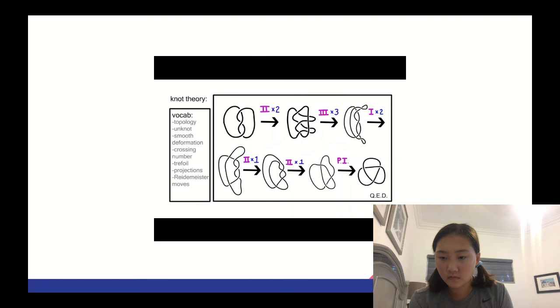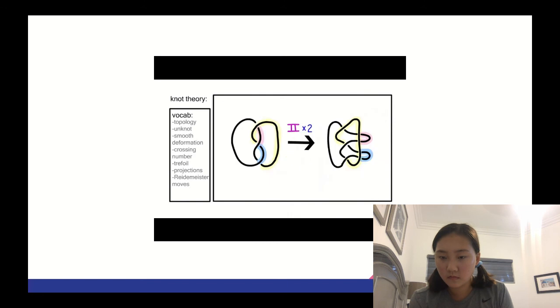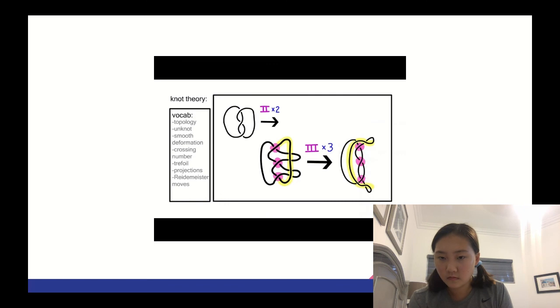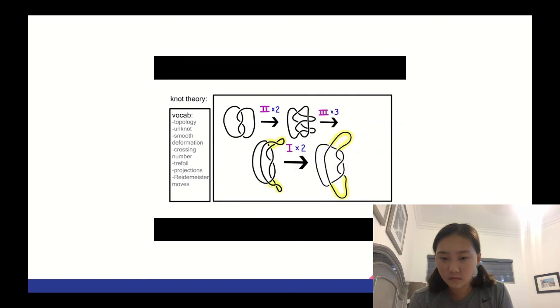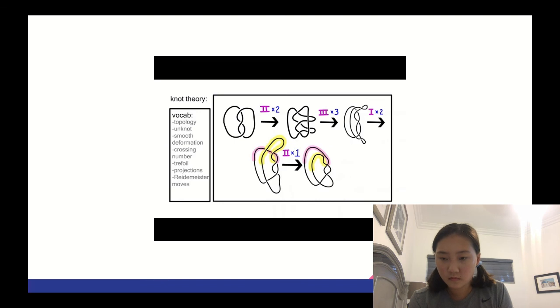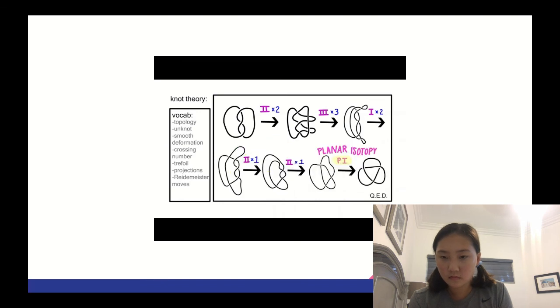This is one possible proof. In knot diagrams, we have to note which moves we use, how many, and draw the projections after each change. We start with the mystery knot, moving the right string over with two type 2s. Then we go over the crossings with three type 3s, untwist the ends with two type 2s, do one type 1 and a planar isotopy, the fancy term for a smooth deformation, and voila! The trefoil!